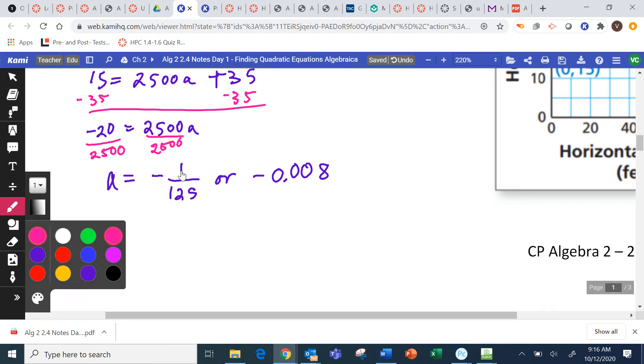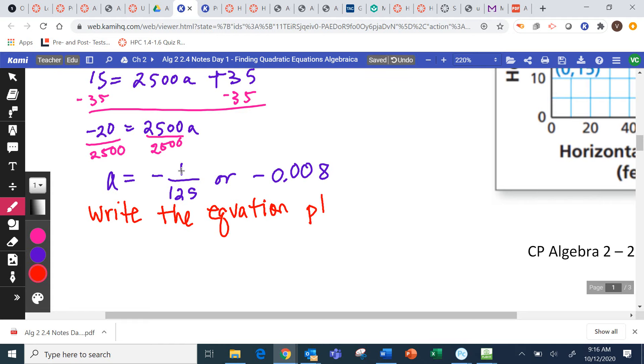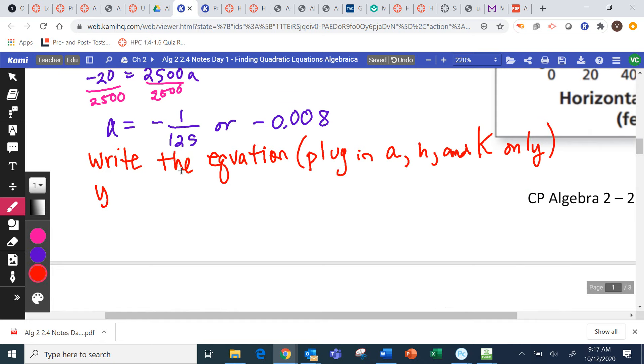Now we're going to write the equation. Plug in A, H, and K only. We're going to use that vertex form one more time. Y equals A times X minus H squared plus K. And I'm going to plug in just A, H, and K. So Y equals our A is negative 1 over 125, X minus H is 50, squared plus 35.